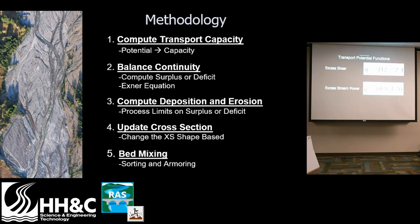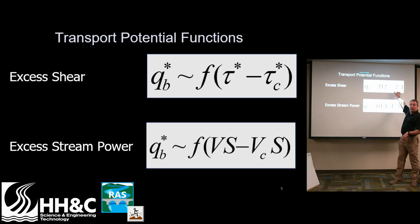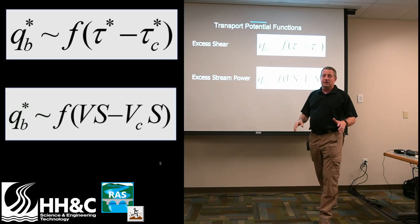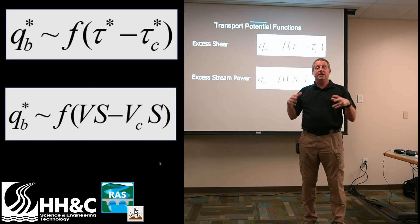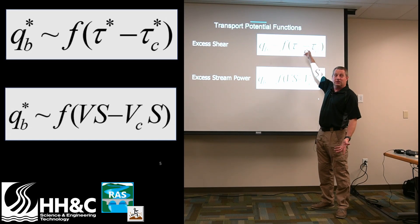Starting with transport capacity: the basic idea for a sediment transport equation is that sediment transport is a function of shear stress minus critical shear stress, or using the dimensionless Shields number, or stream power — velocity times slope — minus critical stream power. If the shear stress for a grain class is less than critical shear stress, it doesn't move. It moves in proportion to how much the shear stress exceeds critical shear stress, usually raised to a power like three-halves. Sediment transport is non-linear.